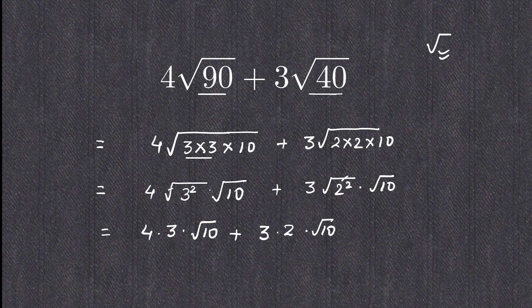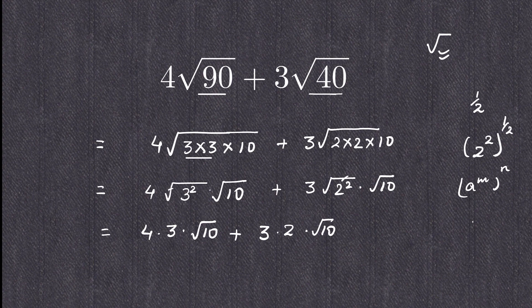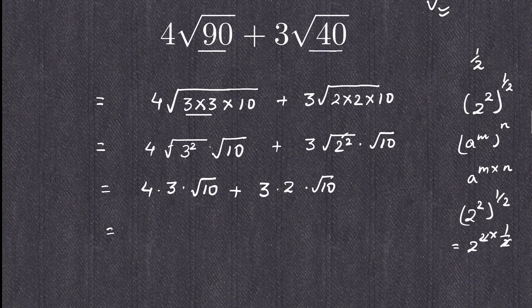How is the square root removed? Square root means a power of 1/2. So 2² with a square root applied becomes 2^(2 × 1/2), using the rule (a^m)^n = a^(m×n). The 2 and 1/2 cancel, giving just 2. That is how the square root is removed.